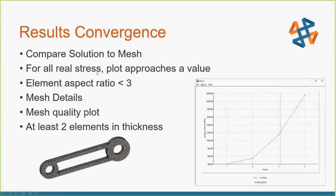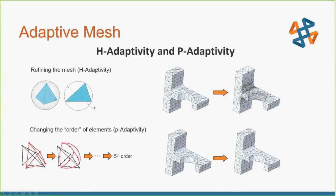So we've looked at mesh convergence. What do we mean by adaptive mesh? There are two types: H-adaptive and P-adaptive. These are available in SOLIDWORKS Simulation Professional — if you have SOLIDWORKS Premium or SOLIDWORKS Simulation Standard you won't have access to them. They are only available for static studies, not thermal or nonlinear studies.